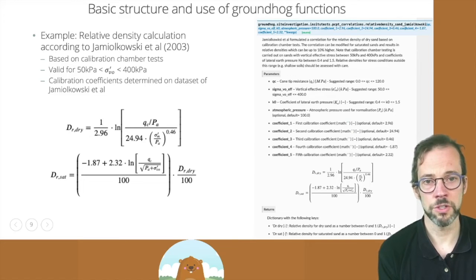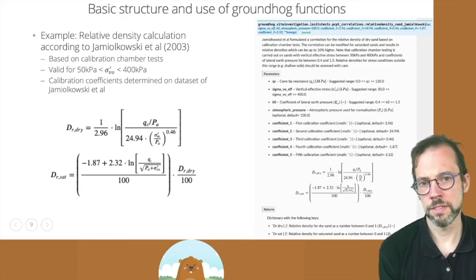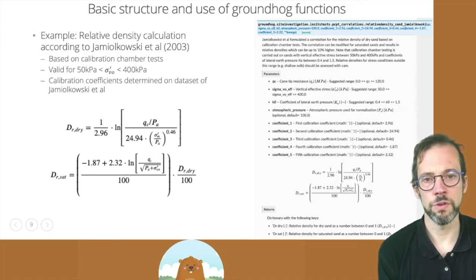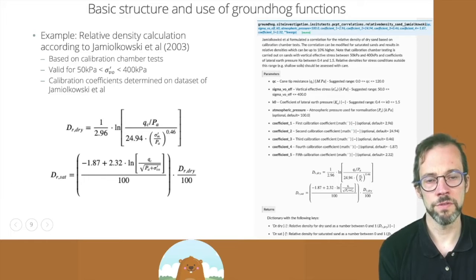And if it isn't, the function will simply return a NAN value, not a number. That will prevent, that will not interrupt your workflow, but it will also prevent the function from being used outside its validation range.